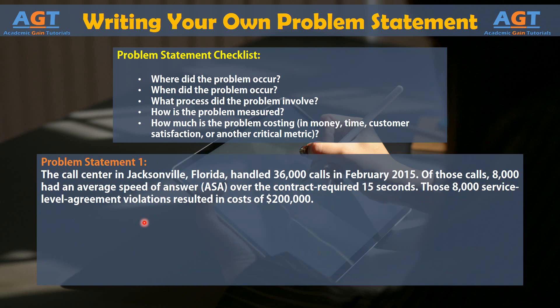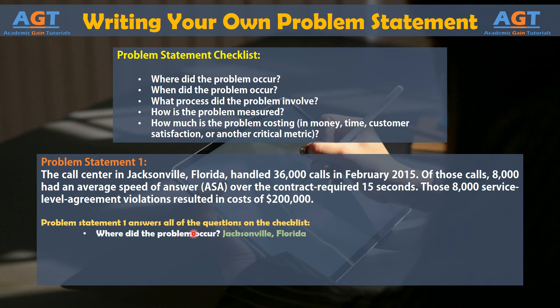Problem statement 1 answers all of the questions on the checklist. Where did the problem occur? The answer is Jacksonville, Florida. When did the problem occur? The answer is February 2015.